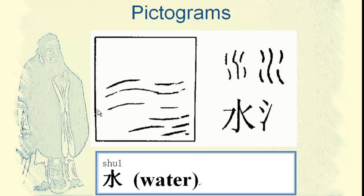Here we have the most important basic things for our life and for the earth. 水 means water. Just notice this picture — the water is flowing. When people write this character, they rotate the picture to the left, and then they changed the picture into the character 水, 水 — means water.